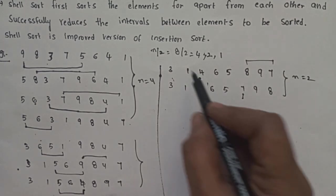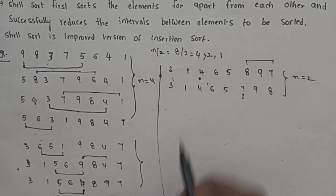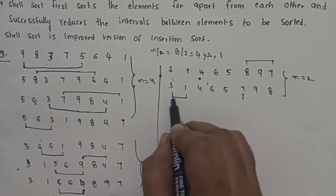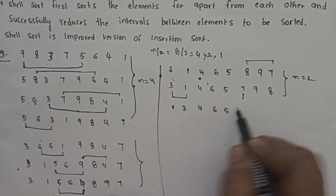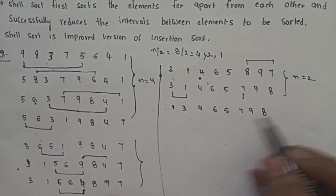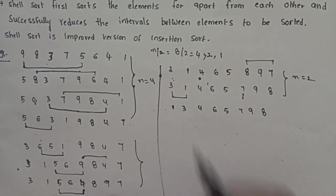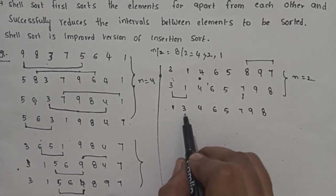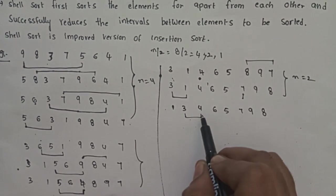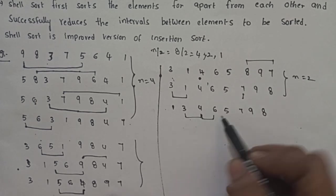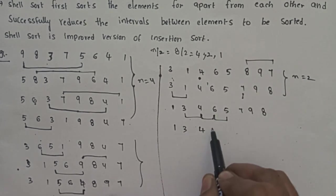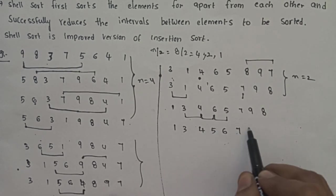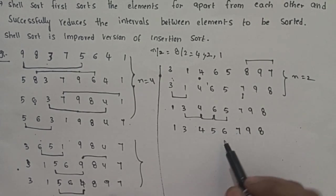Reduce interval to 1. Intervals were first 4, then 2, then 1. With gap equal to 1: comparing 1 and 3 — 1 is less than 3, so swap. Array: 1, 3, 4, 6, 5, 7, 9, 8. Comparing 3 and 4 — no swap. Comparing 4 and 6 — no swap. Comparing 6 and 5 — swap. Array: 1, 3, 4, 5, 6, 7, 9, 8.